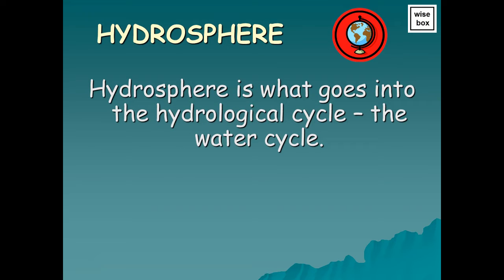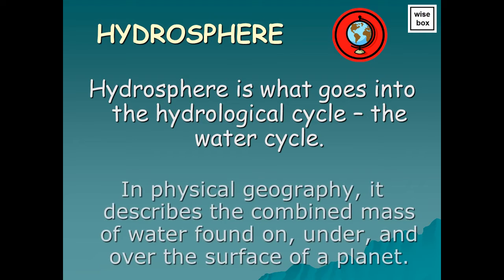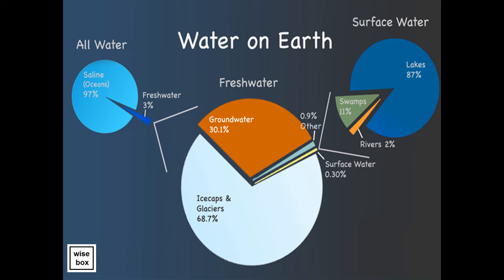In physical geography, it describes the combined mass of water found on, under, and over the surface of a planet. Here is the proportion of all water on Earth, such as saline water, fresh water, and surface water.